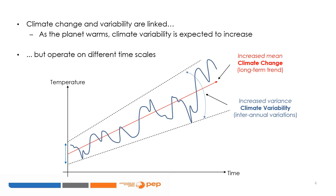However, climate change and climate variability operate on different time scales. Climate change is a long-term trend — an example is an increased mean temperature. Climate variability refers to shorter-run variations — an example is inter-annual variations around the long-term trend line.